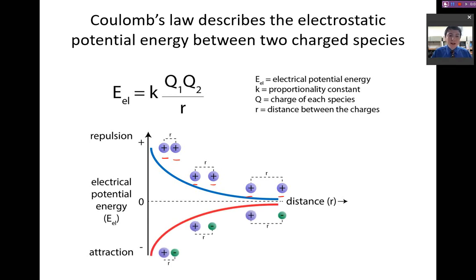The opposite is true for attractive interactions. These occur when we have positive and negatively charged species interacting with each other. When they are very close to each other, there is a low potential to do anything, yet as we increase the distance between them, they have a high tendency to want to snap back together.